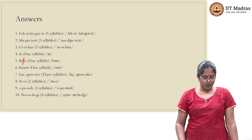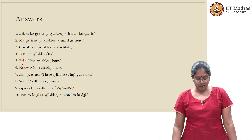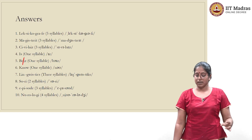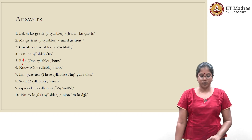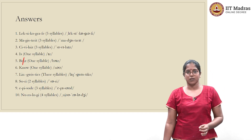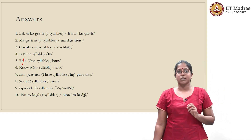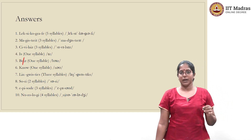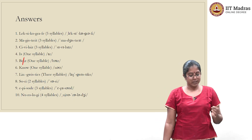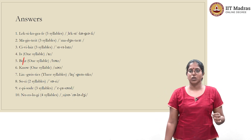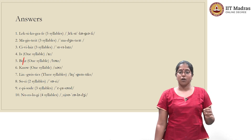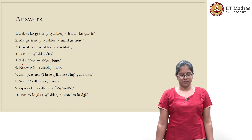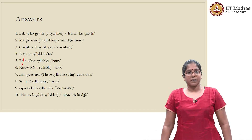The sixth word is no — it is a one-syllabled word. The seventh is linguistics — a three-syllabled word. The eighth word is sorry — a two-syllabled word. The ninth word is episode — a three-syllabled word. And the tenth word is neurology, which is a four-syllabled word.